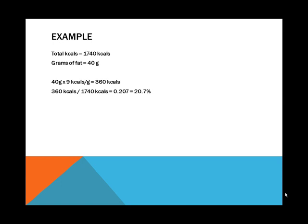The same process applies for fat. If there were 40 grams of fat on this day, 40 times 9 is 360 calories. Dividing 360 by 1,740 gives us 20.7% of calories from total fat.